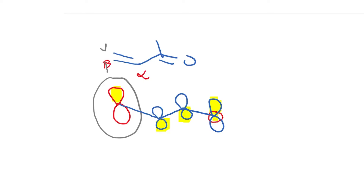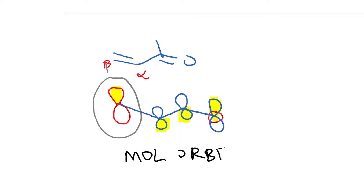Let us understand some structural aspects of the carbonyl addition versus the conjugate addition. We have already looked at the molecular orbital picture of the alpha-beta unsaturated ketone.